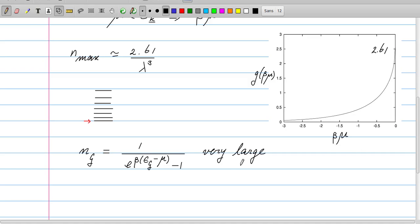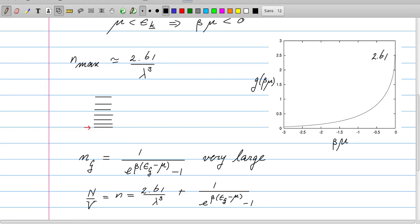And if it's really very large, we should split it off from the sum before we transform that sum into an integral. So the picture that emerges is one where we have an ordinary fraction which satisfies the ordinary Bose-Einstein distribution, and those particles can only be filled up to 2.61 per λ³. And the remainder is going to be a very, very large number, and that is going entirely into the ground state. And this is what is called the Bose-Einstein condensation.